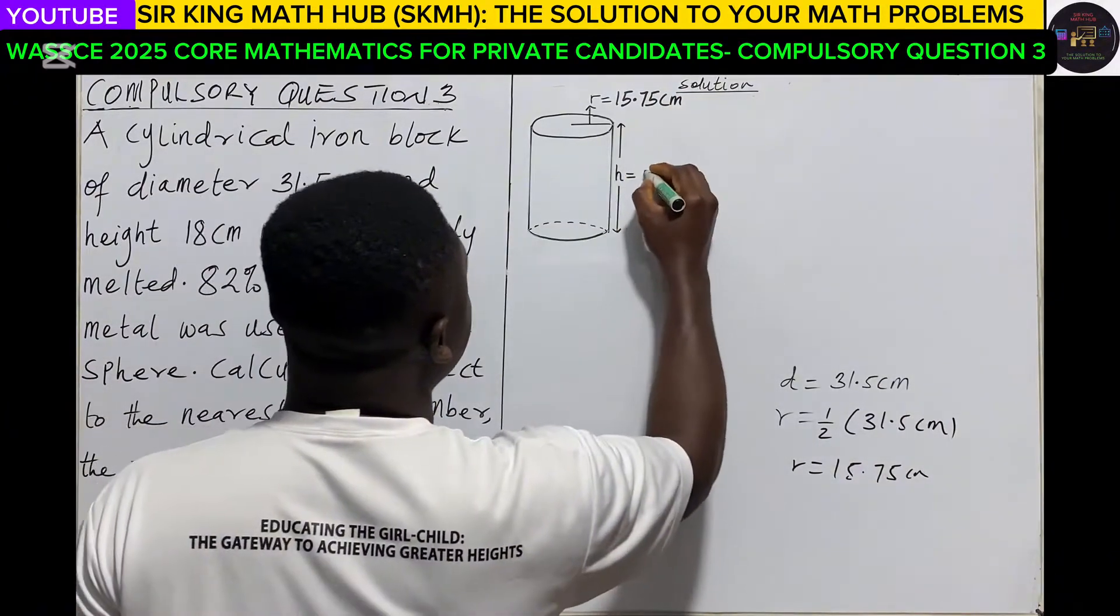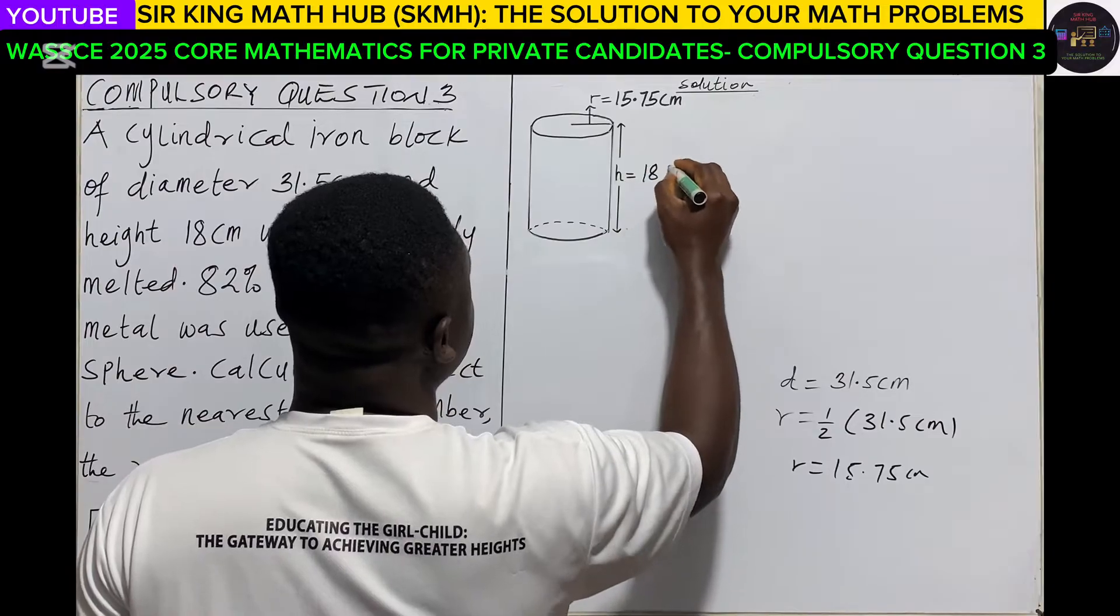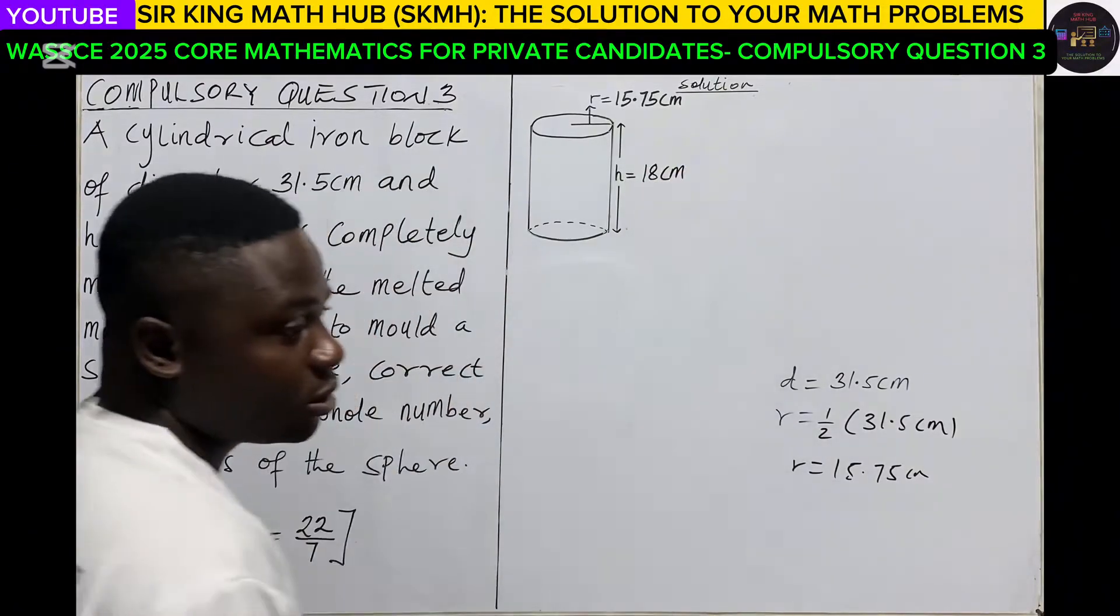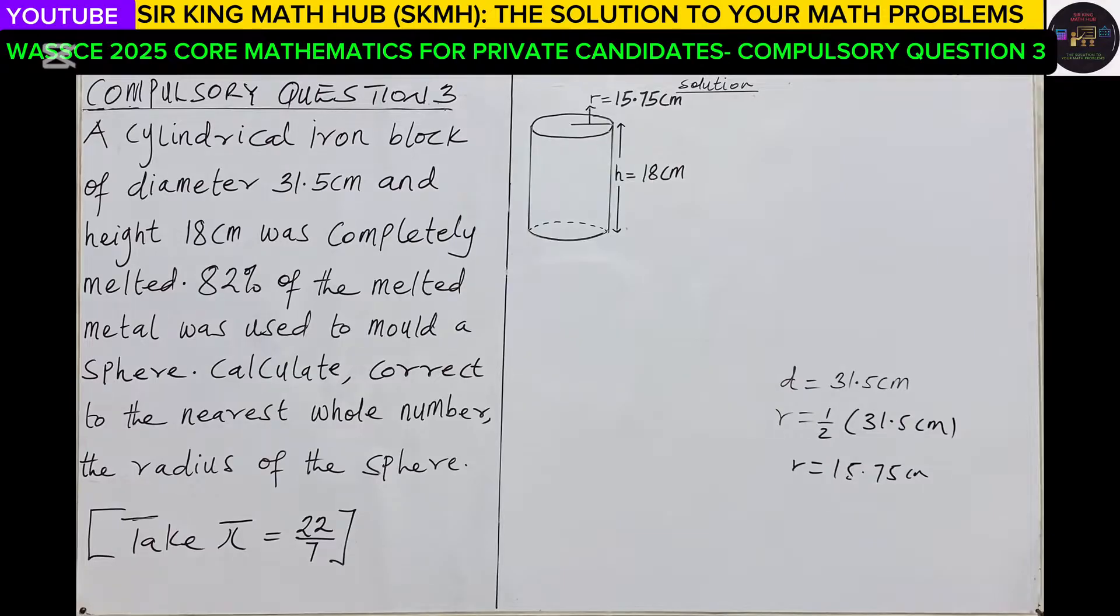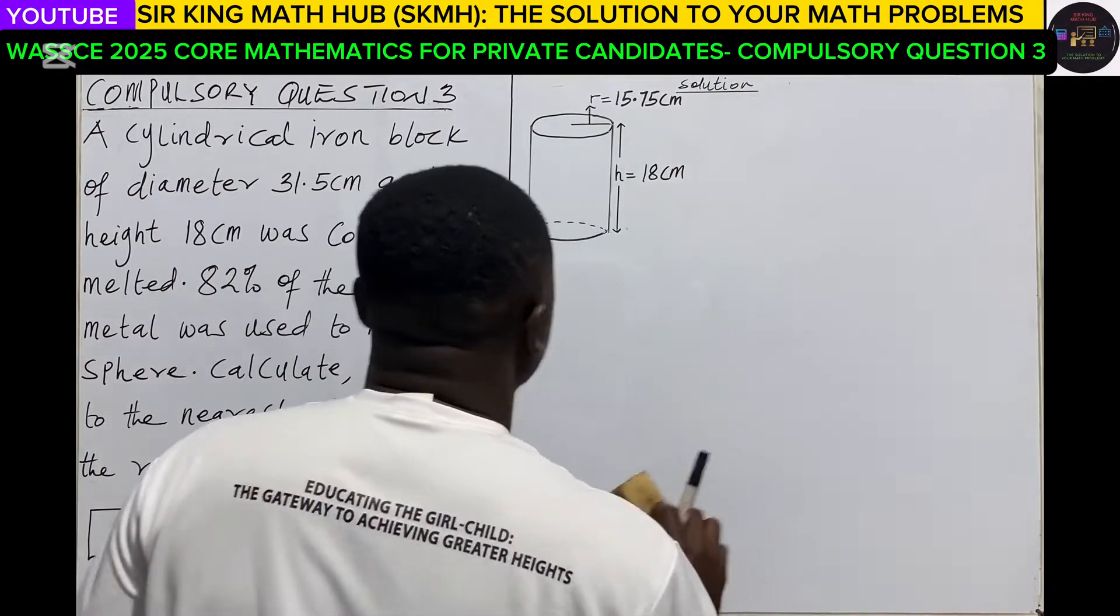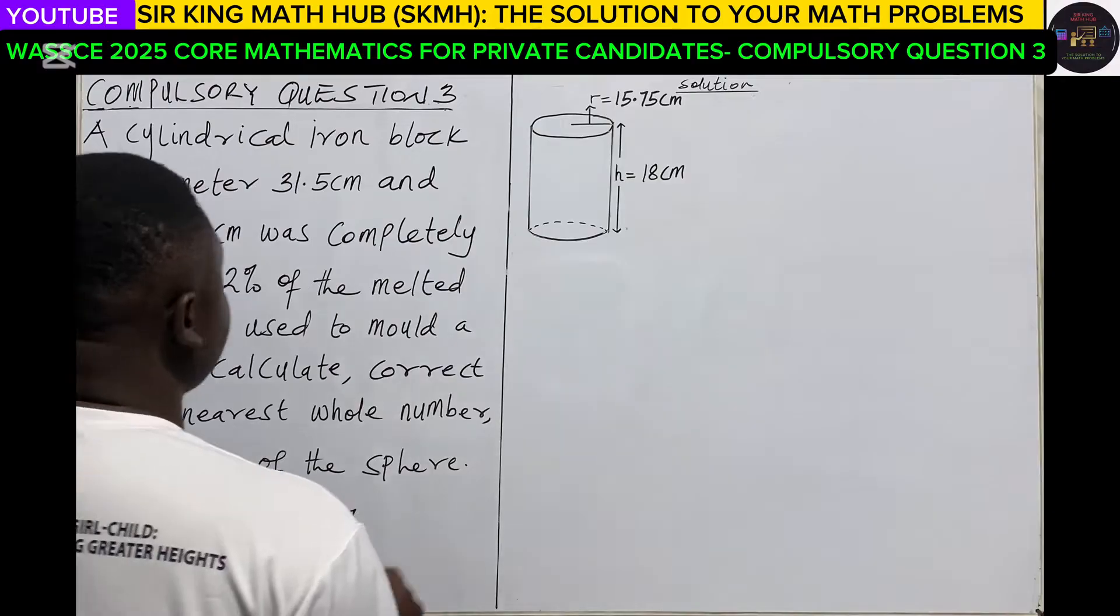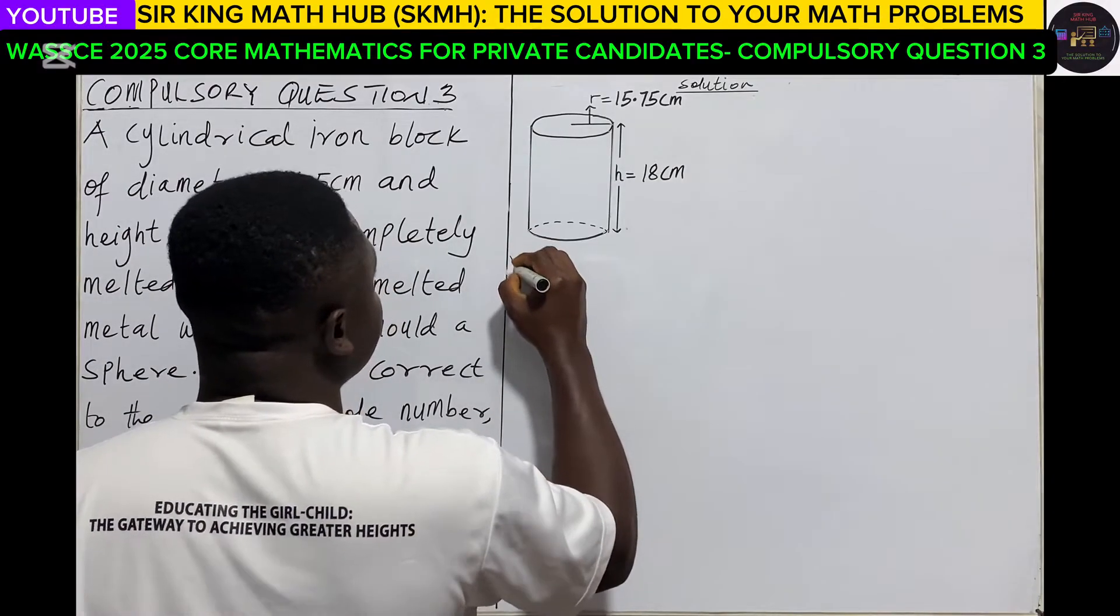And then for the height, it was given as 18 centimeters. Now the next step, let's calculate the volume of the cylindrical iron block.